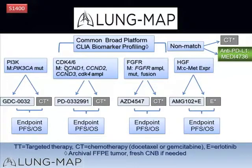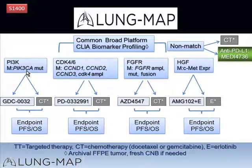The four targeted arms of the trial: the first arm is targeting patients with PIK3CA mutations. The agent chosen for this arm is a beta-sparing PI3 kinase inhibitor, JDC0032. It's an oral agent, and the standard of care chemotherapy comparator is docetaxel.